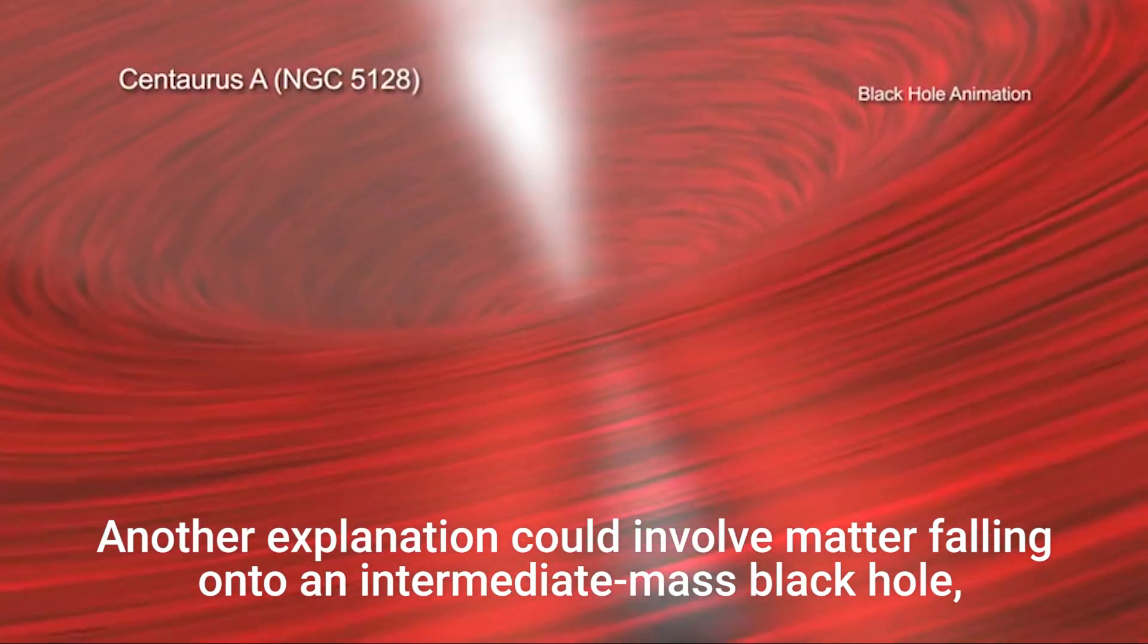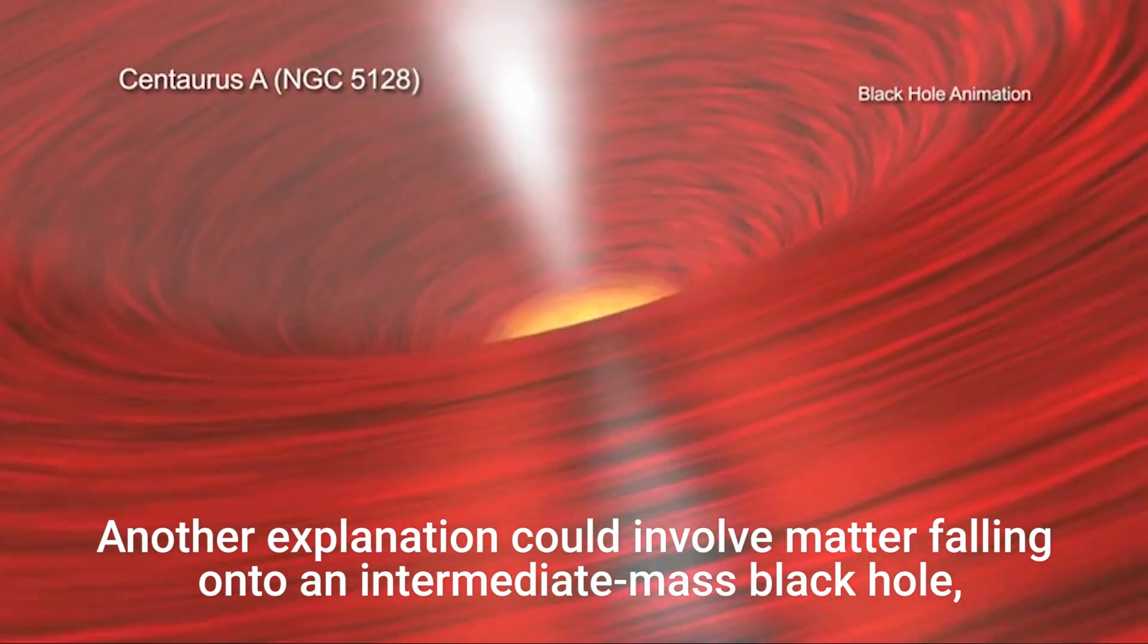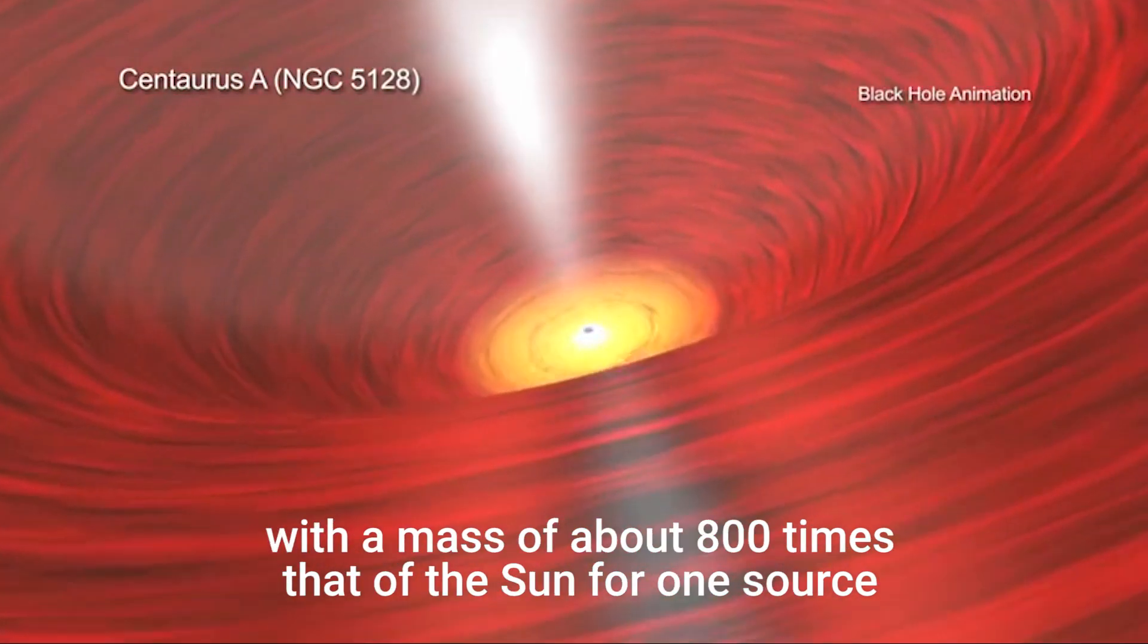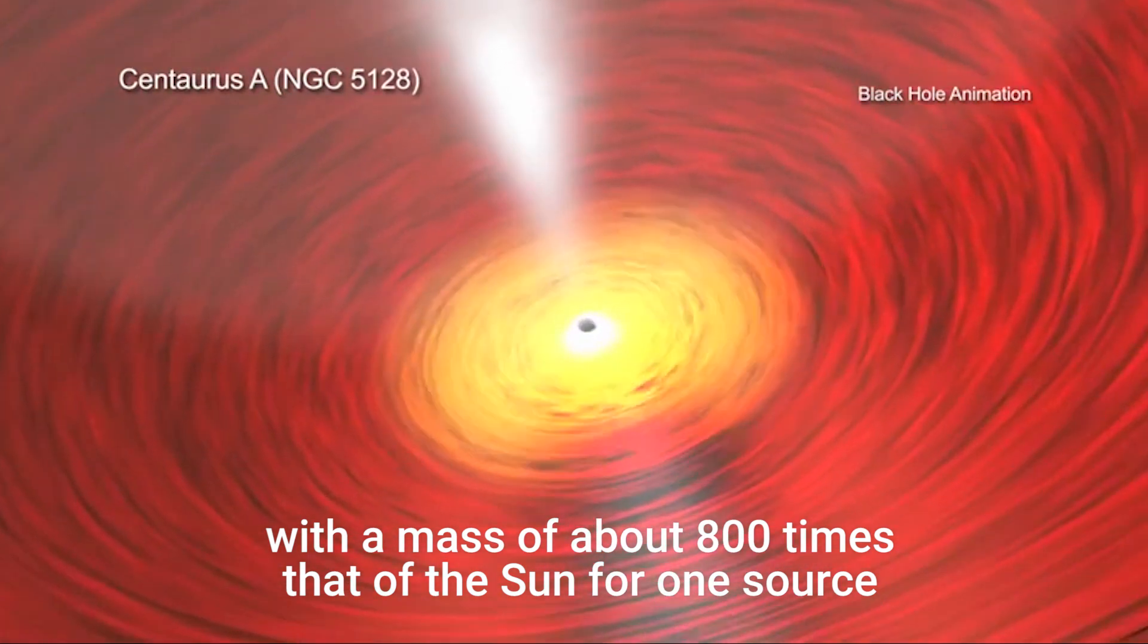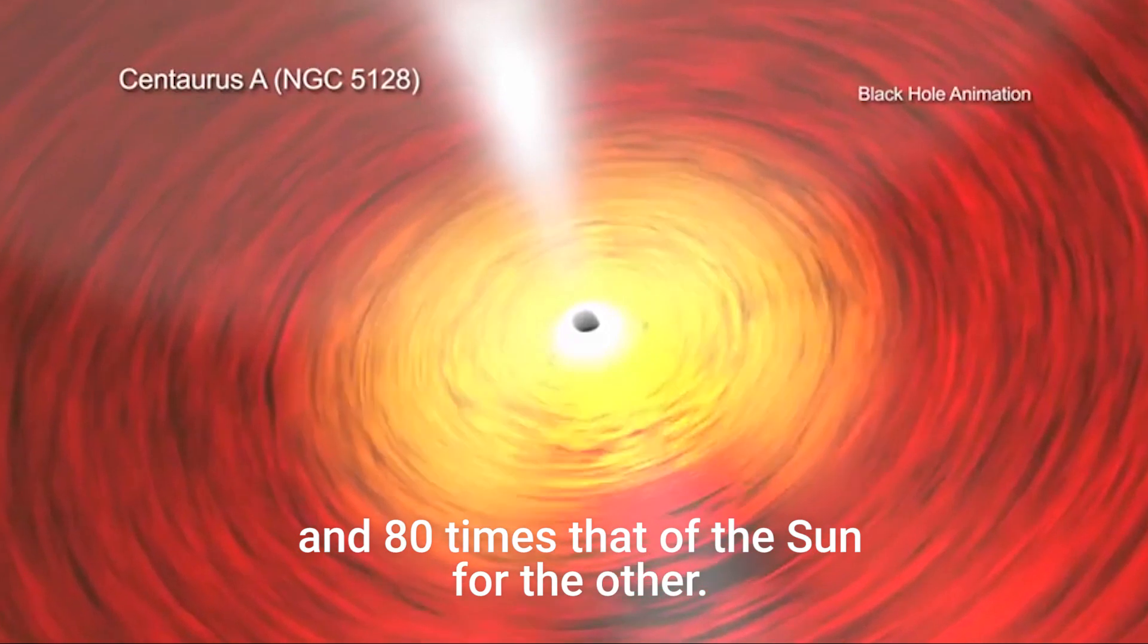Another explanation could involve matter falling onto an intermediate-mass black hole, with a mass of about 800 times that of the Sun for one source and 80 times that of the Sun for the other.